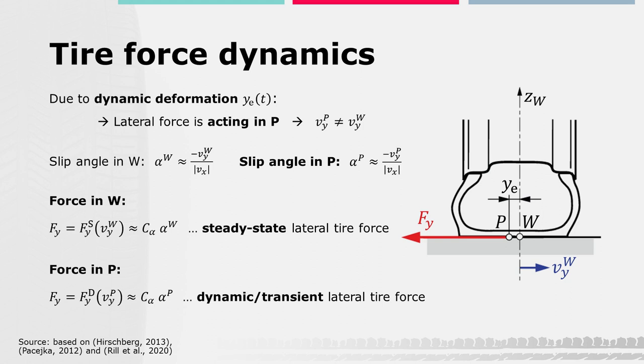Let's take a look at the simple schematic illustration here on the right side. Until now, we assumed a rigid carcass and assumed that the resulting lateral tire force Fy is always acting in the middle plane of the contact patch, which coincides with the wheel point W in the wheel plane. However, due to the dynamic deflection or deformation, the middle of the contact patch shifts. Therefore, the lateral tire force Fy is now acting in a point P that deviates from the wheel plane. At zero slip, P will coincide with W. The slip angle in W is given by the lateral sliding velocity in W and the longitudinal velocity, so the lateral force in W is a function of this slip angle and the cornering stiffness. We call this force the steady-state tire force Fys.